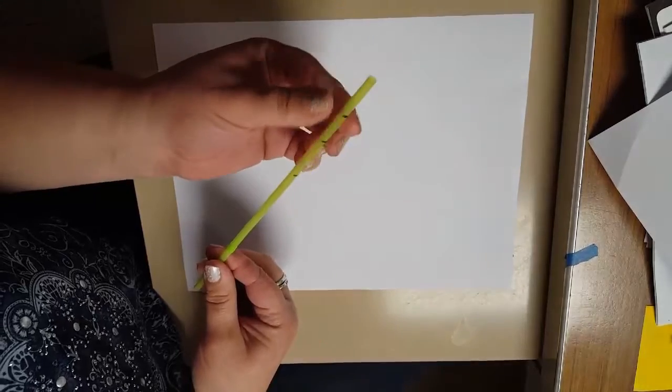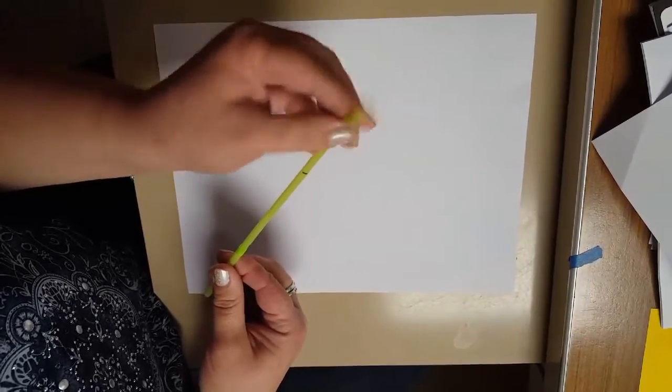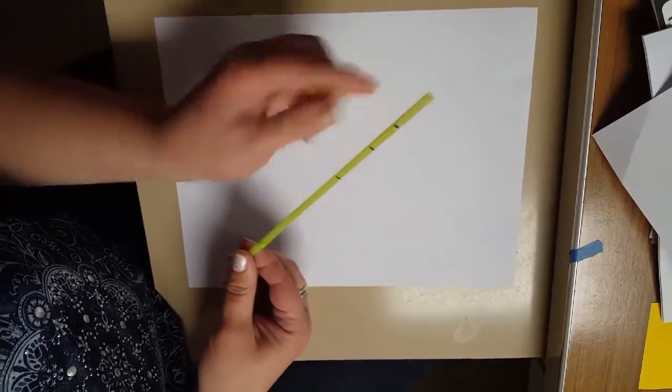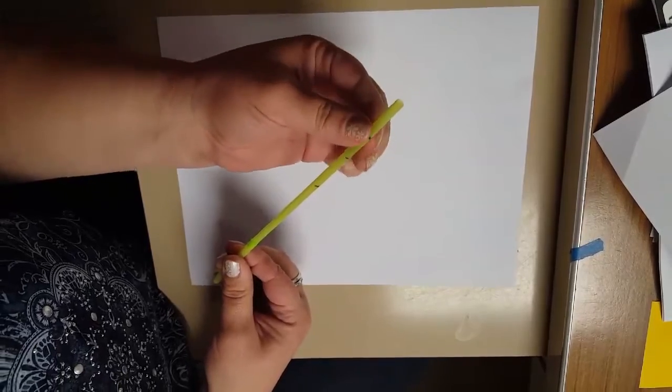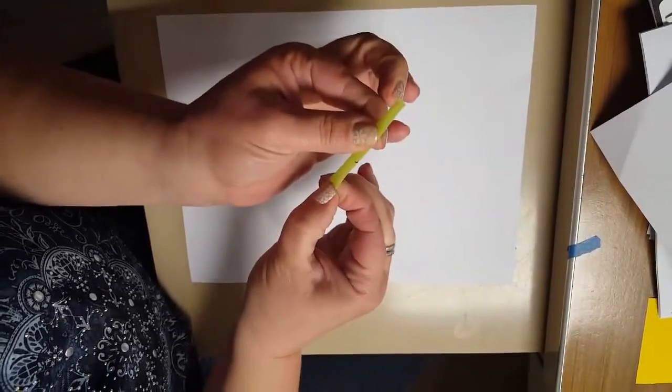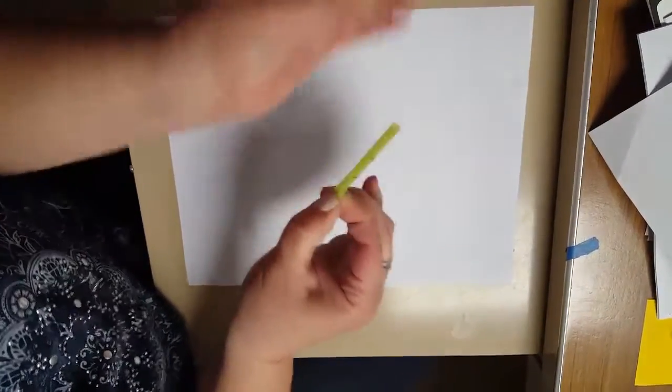In order to cut them so that they will bend, because right now they don't want to bend very well, you have to pinch the straw in half and you want to pinch it down so that you make all of your cuts on the same angle.